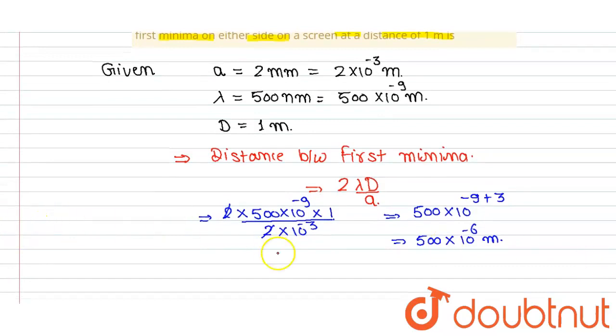If you want to solve further with the values, we can write 5 multiply 10 to the power minus 4 meter. We can also write here that is 0.5 millimeter. That is our answer.